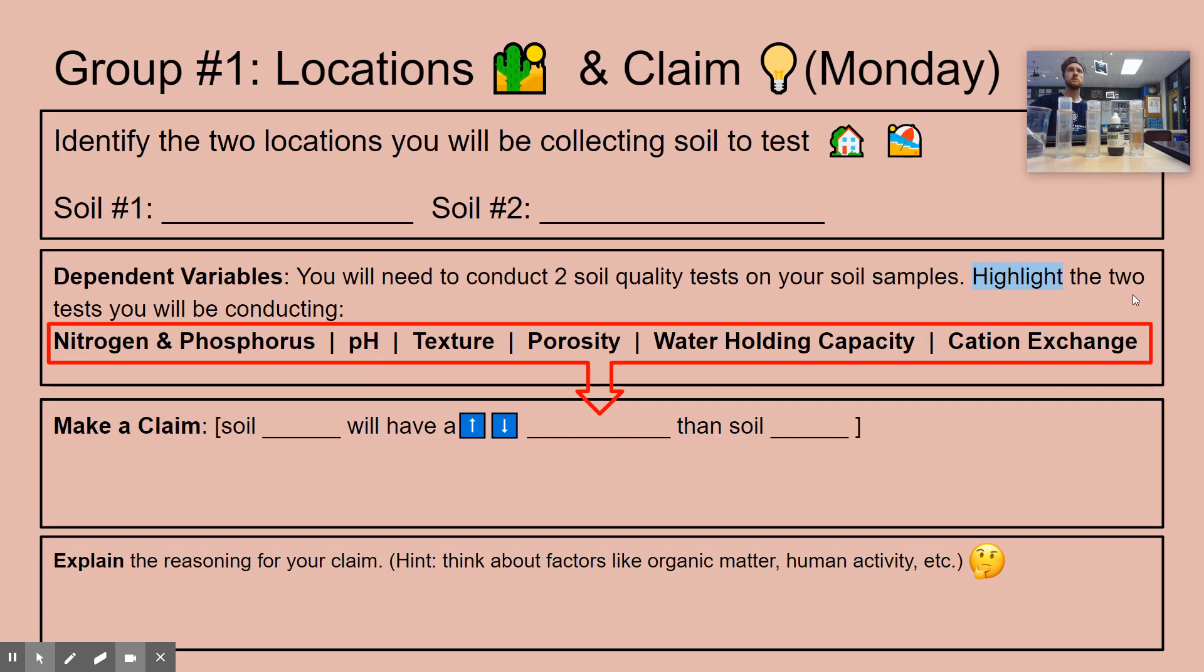They pick their two locations. After showing them this video or helping them understand how these different soil tests are done, I ask them to pick two characteristics or qualities of soil that they're going to measure. I try to make it really straightforward for students. I like to make it straightforward and just have them highlight the two soil variables or soil quality measures that they're going to test. If you want to simplify this, you can take out cation exchange capacity. It's one of the more challenging and nuanced points.